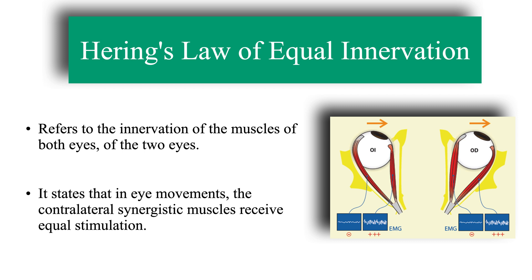Harrington's law, also known as the Law of Equal Innervation or Law of Motor Correspondence, refers to the innervation of the muscles of both eyes. It states that in eye movements, the contralateral synergistic muscles receive equal stimulation. That is to say, the nervous stimuli sent by the oculomotor centers to the ocular muscles for the realization of a movement in a certain direction have the same intensity for both eyes.